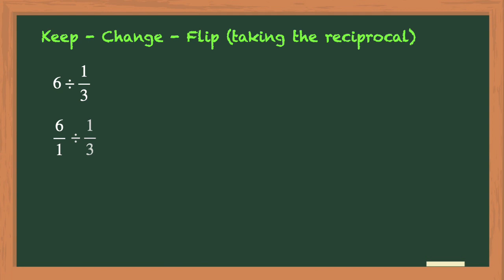Then next, you will change the division sign to multiplication, and then you will flip the numerator and denominator in the second fraction of 1/3 to 3 over 1. Flipping that second fraction is also known as writing the reciprocal.